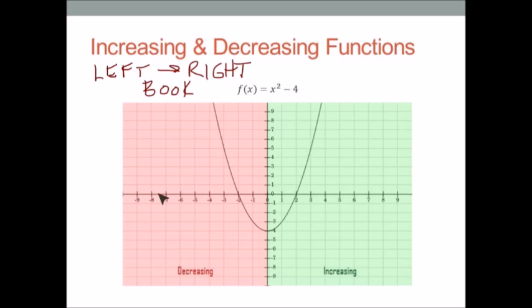And as soon as I get to the bottom of the hill, I'm going to start clinking all the way to the right. So the whole way through: screaming down to the bottom, then clinking all the way to the right forever. So this function decreases on the left side and then increases on the right side.